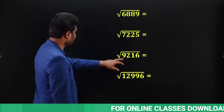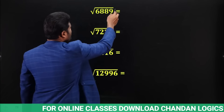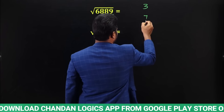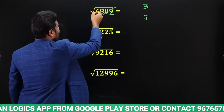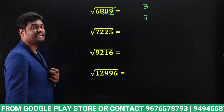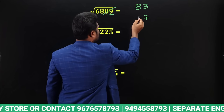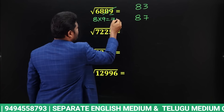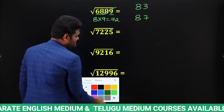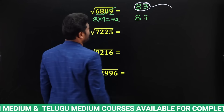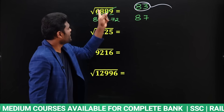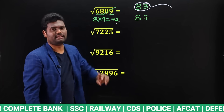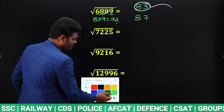For √6889: last digit is 9, possibilities are 3 or 7. Strike off last two digits — remaining is 68. Perfect square close to 68 and less than 68 is 8² = 64, giving 83 or 87. Multiply 8×9 = 72. Compare: 68 is less than 72, so answer is the smaller value — 83. So √6889 = 83.